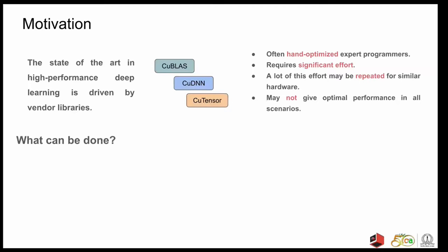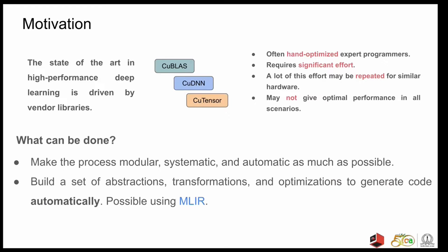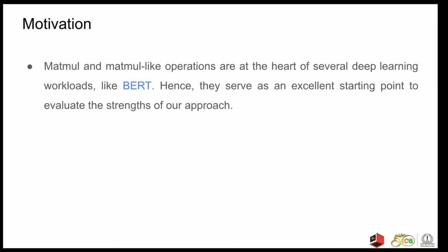So what we can try to do is to make the process of developing these libraries much more modular, systematic, and automatic. This can be done by building the right set of abstractions, transformations, and optimizations to generate code automatically. And of course, this could be made possible using MLIR. In this work, we focus on MatMul and MatMul-like operations as they are at the heart of several deep learning workloads like BERT. Hence, they serve as an excellent starting point to evaluate the strengths of our approach.